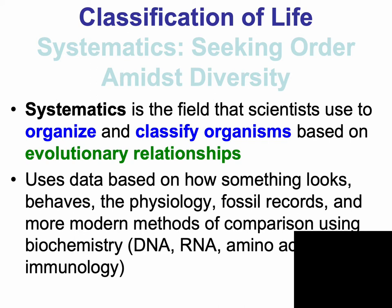Fossil records are also used to infer the age of an organism in comparison to other organisms. Most useful now to the field of systematics are modern methods of biochemistry, looking at simple things like gene sequences or the amino acid sequence of a protein. Scientists might also use immunology to look at antibody similarities and interactions of antibodies with their antigens, or even compare whole genomes between organisms.